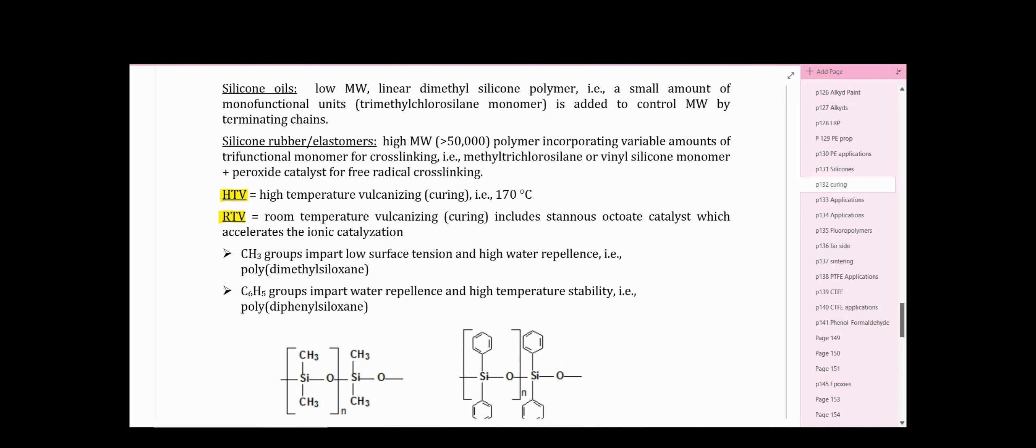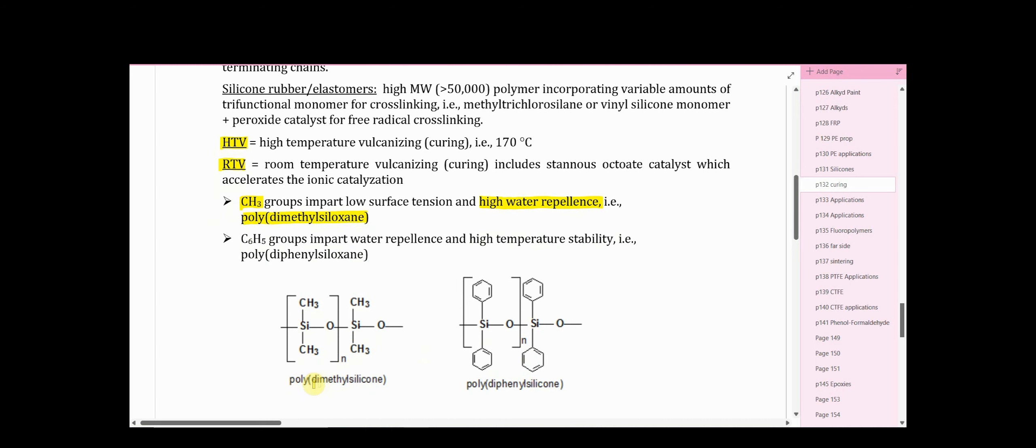The alkyl groups in these dialkyl silicones are typically either methyl groups that are said to impart low surface tension and high water repellency - hence we have silicone waxes that make the water on your car bead up. Polydimethylsiloxane shown down here. Or phenyl groups which also impart water repellency as well as high temperature stability. And here we have polydiphenyl silicone.